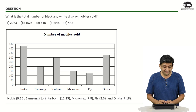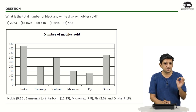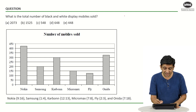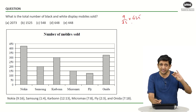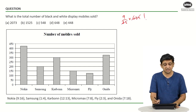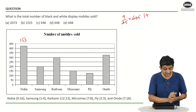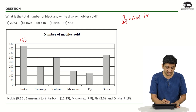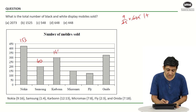Going ahead and solving the first question — for Nokia, the ratio of black and white to color is 9:16, so the number of black and white mobiles is 9/25 × 425 = 153. For Samsung, it is 1/5 of 200, which gives 40. For Carbon, it is 12/25 × 300: since 12 × 12 = 144, that gives 144.